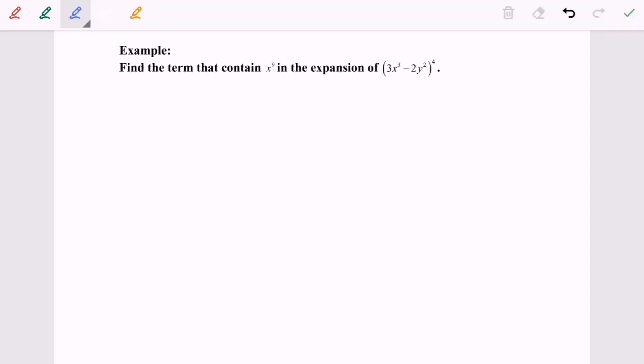Hello everyone, so now I'm going to discuss the example for the binomial expansion where n is a positive integer. Find the terms that contain x to the power of 9 in the expansion of (3x³ - 2y²)⁴.